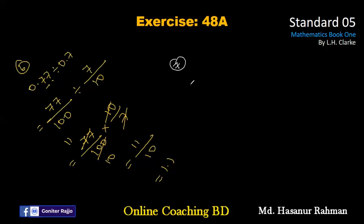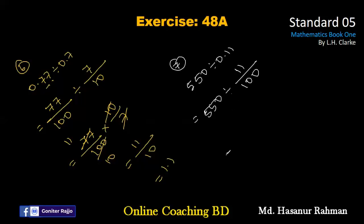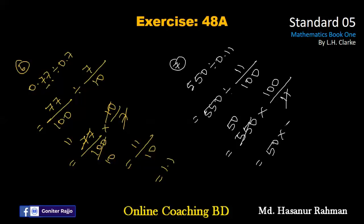Number seven says 550 divided by 0.11. We convert 0.11 into a fraction: 0.11 actually represents 11 divided by 100. We convert the division sign into multiplication and take the reciprocal, so it becomes 100 divided by 11. Then 550 divided by 11 is 50, and 50 multiplied by 100 is 5000.